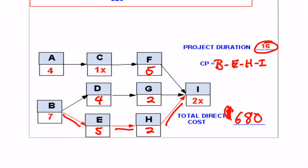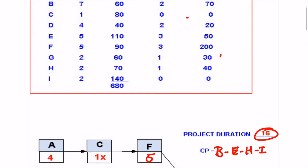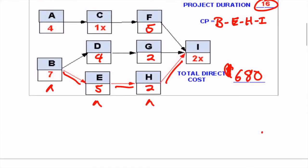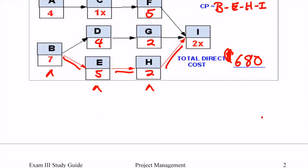So we need to see which one of these we want to reduce in order to crash our project. It looks like our candidates here are going to be B, E, and H, since I cannot be crashed. If we look at these particular ones, we'll see that H is the cheapest one at $40. It looks like we can crash this only one time, but we'll go ahead and do that. So we're going to be crashing H down.